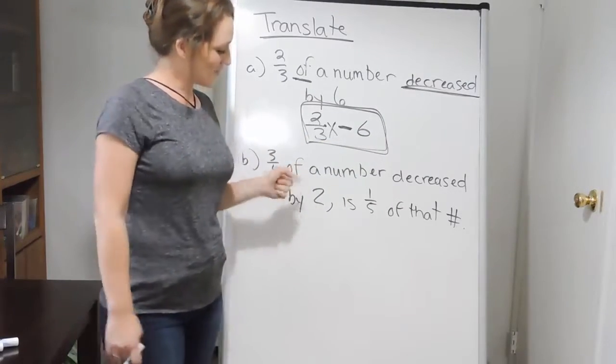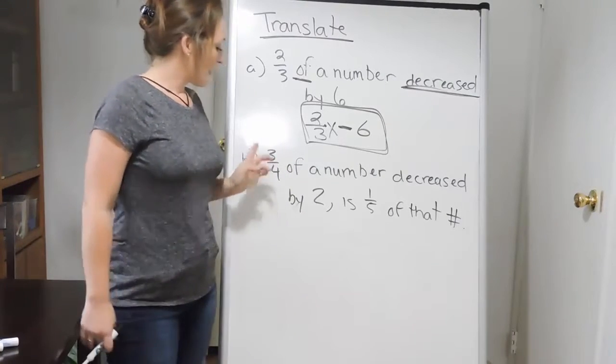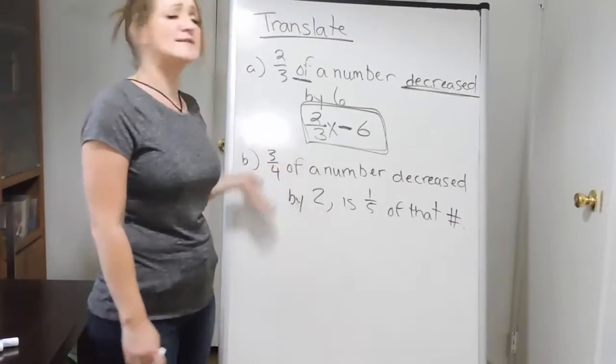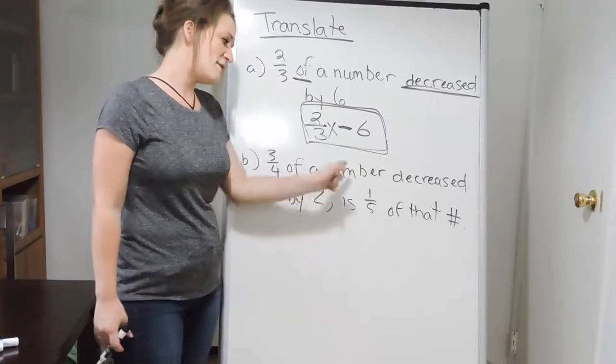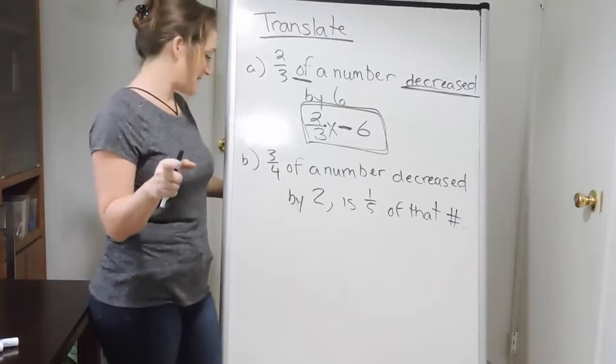All right, so let's move on to another one and see maybe if that one makes any more sense. So here we have three-fourths of a number decreased by two, and it says that this is one-fifth of that number. Okay, so again, one word at a time.